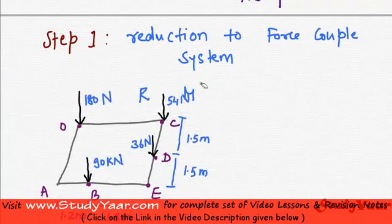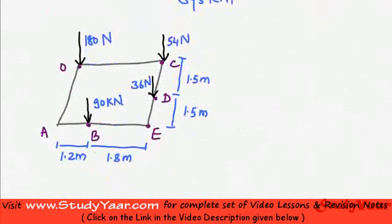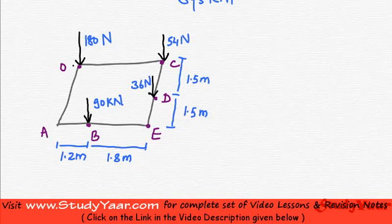Let us choose our coordinate axis. Let us take this as the origin because we are going to find the moment about this point. We are going to translate this force to this point, this force to this point, and this force to this point.